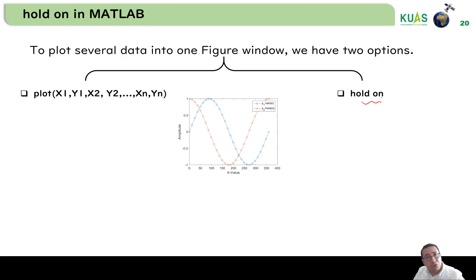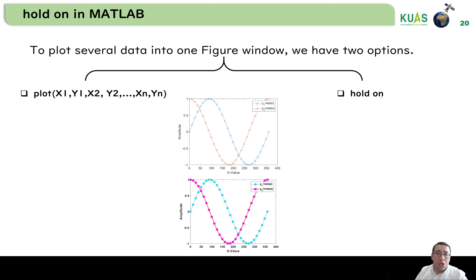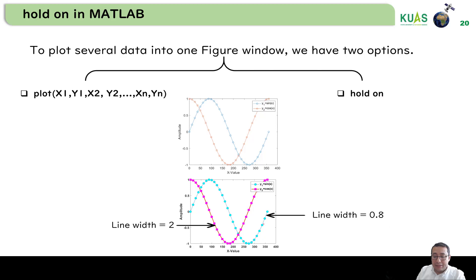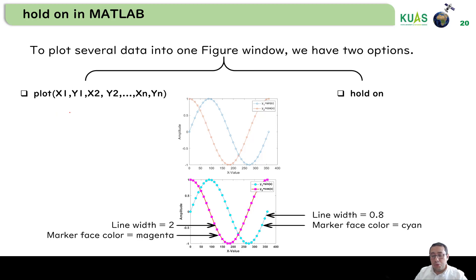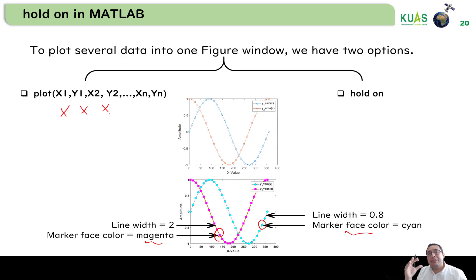The first is plot(x1,y1,x2,y2,...,xn,yn) to draw different curves at the same plot. The second option is to use the hold on function. But why learn hold on if we already know plot(x1,y1,x2,y2)? The limitation is that if we need to change the format or style between the two curves, some properties are difficult to change using the plot(x1,y1,x2,y2) syntax.